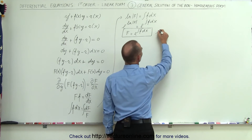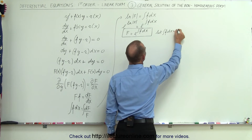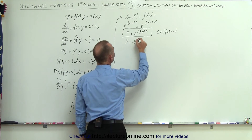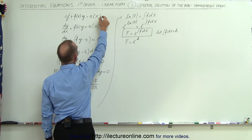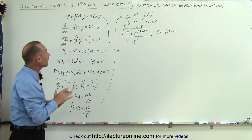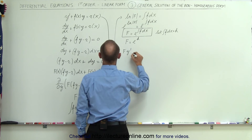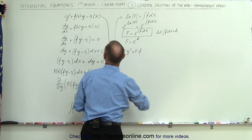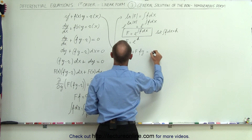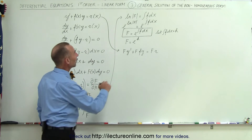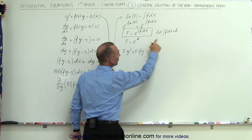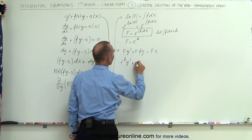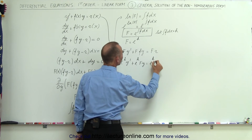To simplify things, we're going to let h equal the integral of f times dx. Then the integrating factor φ equals e to the h. Now I'll multiply both sides of the original equation by this integrating factor, giving φ·y' plus φ·f(x)·y equals φ·r. Substituting e to the h, this becomes e^h·y' plus e^h·f·y equals e^h·r.